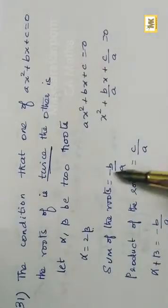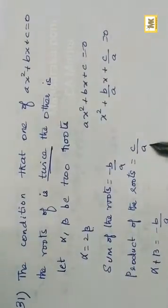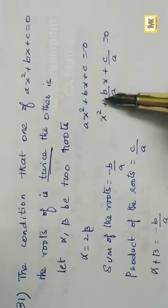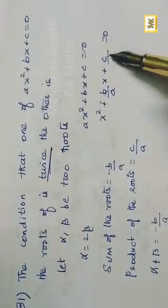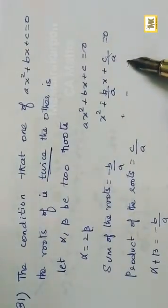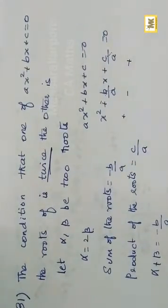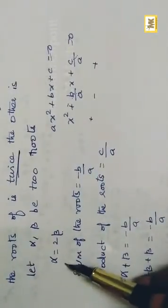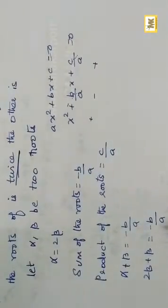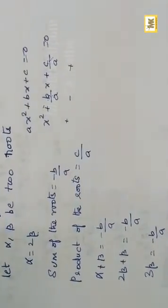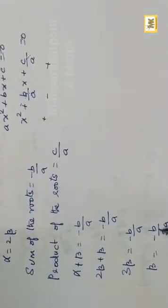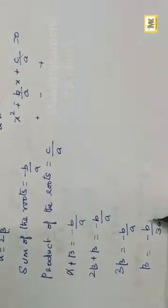Sum of roots: alpha+beta = -b/a. Substituting alpha = 2·beta: 2·beta+beta = -b/a, so 3·beta = -b/a, giving beta = -b/(3a).